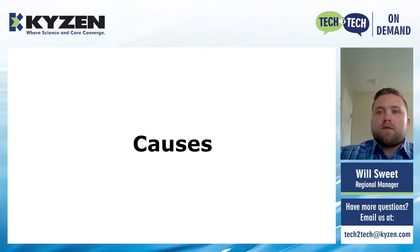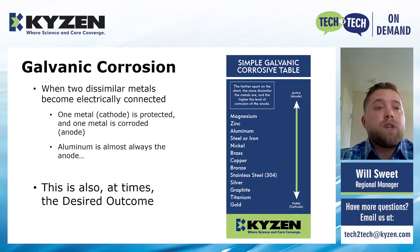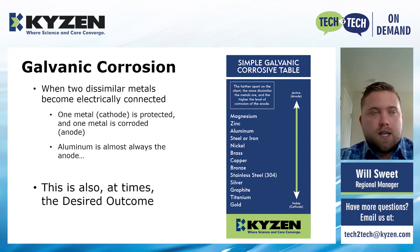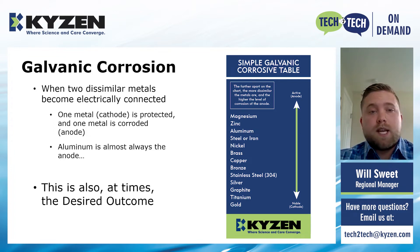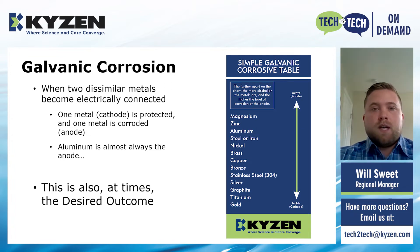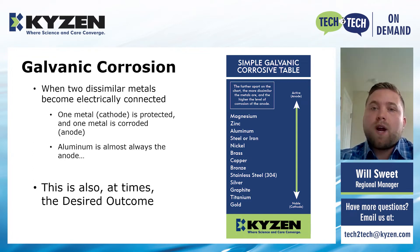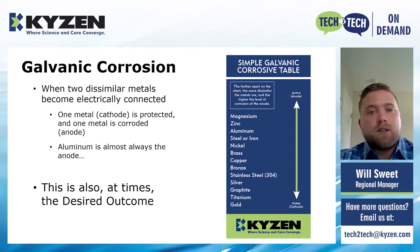One of the causes of corrosion in aluminum working facilities is galvanic corrosion, which occurs when two dissimilar metals become electrically connected — typically in immersion processes where parts are immersed in water together and an electric current flows through that water. In this process there is one metal, the cathode, and another that is the anode. The cathode is always protected while the anode takes all the corrosive action. Looking at the galvanic scale table, materials towards the top are more active and serve as anodes more often. If you have aluminum and brass in the same bath, the aluminum will receive the corrosive action and act as the shield for the copper.